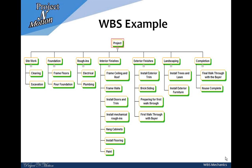Let's look at an example to see what we have learned. It is a graphical representation of a project plan for building a house. At level 1 we have the project title itself. At level 2 it is divided into seven phases: 1.1 is site work, 1.2 is the foundation, 1.3 is rough ins, 1.4 is interior finishes, 1.5 is exterior finishes, 1.6 is landscaping, and 1.7 is the completion phase. These phases are further divided into work packages at level 3, which is the last level in this WBS. All items in level 3 are work packages responsible for outcomes that contribute towards the completion of the house.